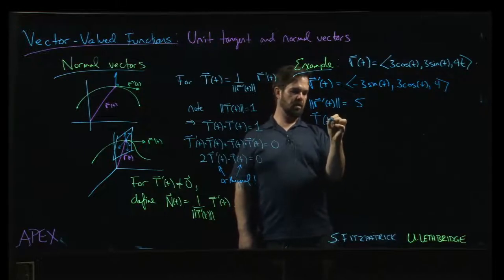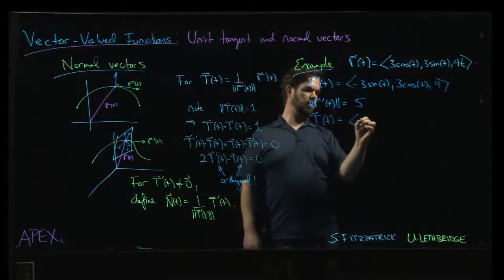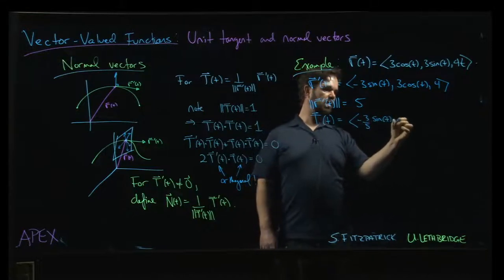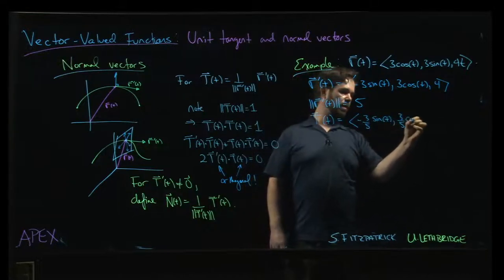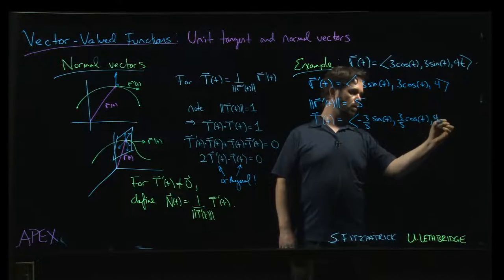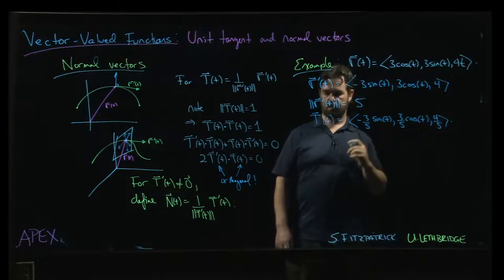So our unit tangent is going to be minus 3 over 5 sine t, 3 over 5 cosine t and 4 over 5.